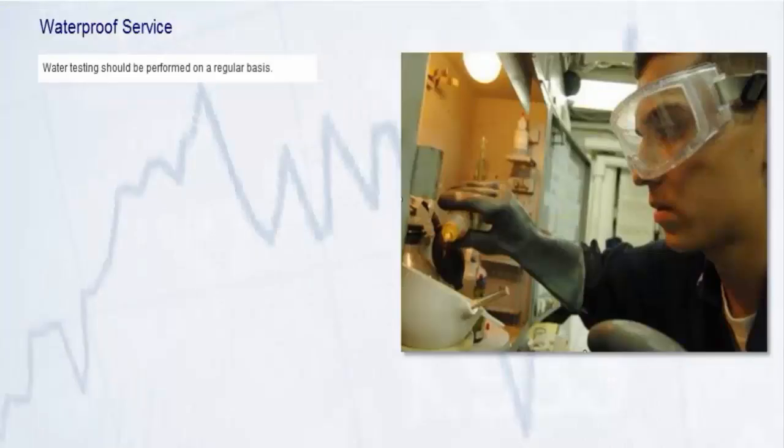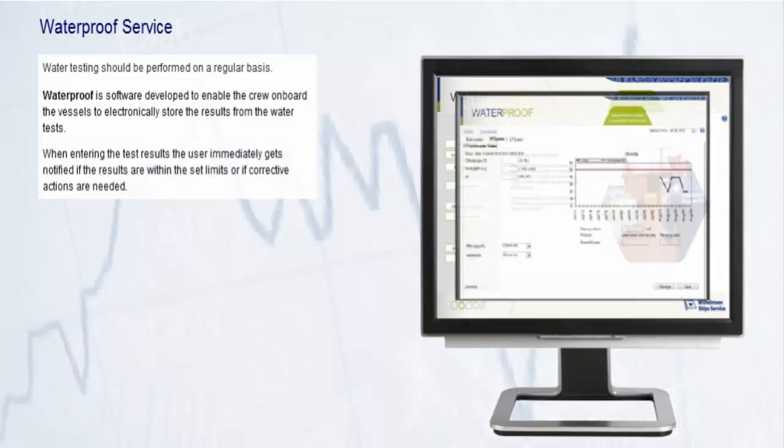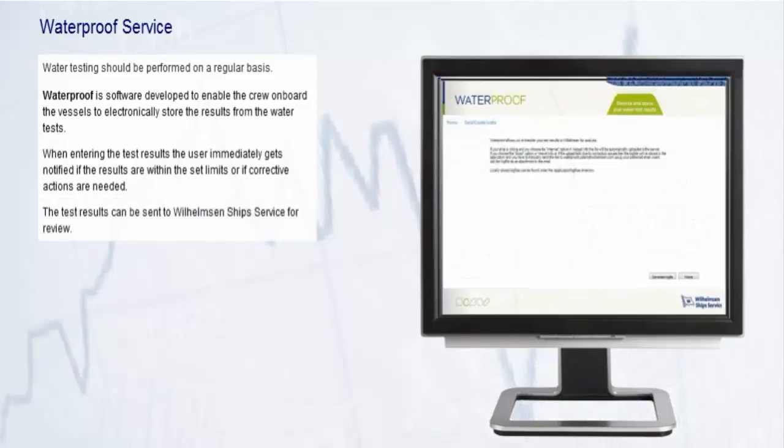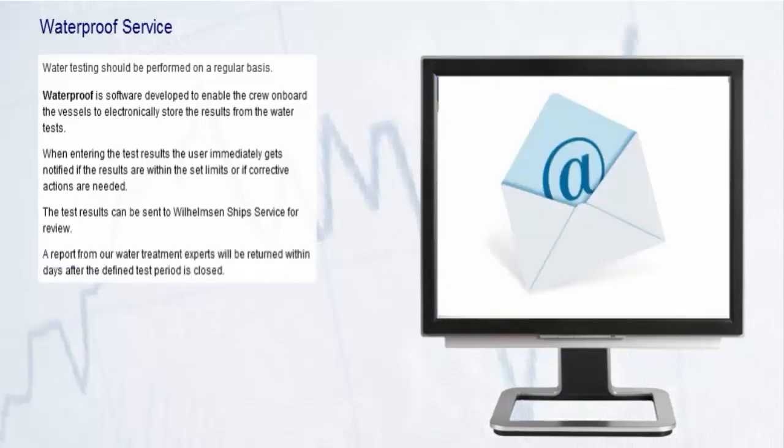Water testing is an essential shipboard activity that should be performed on a regular basis. Waterproof is software developed to enable the crew on board the vessels to electronically store the results from the water tests. When entering the test results, the user immediately gets notified if the results are within the set limits or if corrective actions are needed. The test results can be sent to Wilhelmsen Ships Service for review. A report from our water treatment experts will be returned within days after the defined test period is closed.